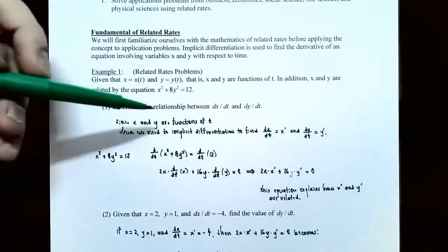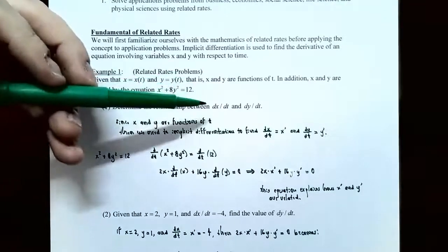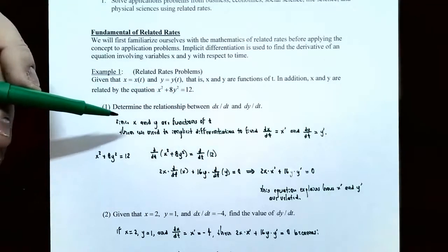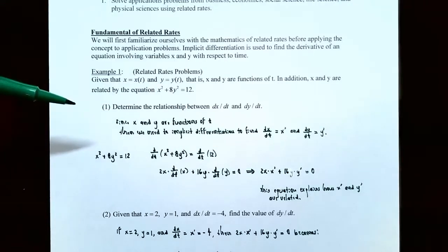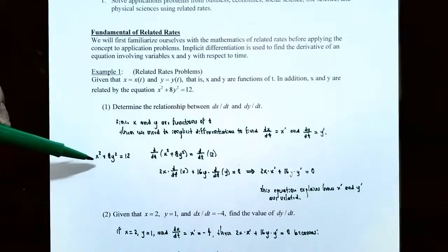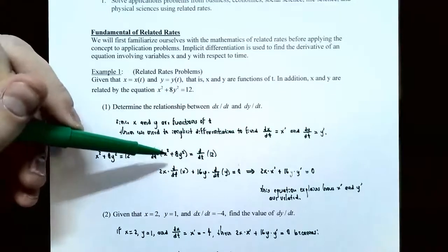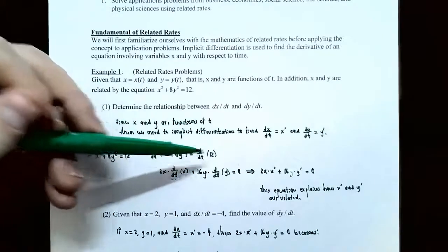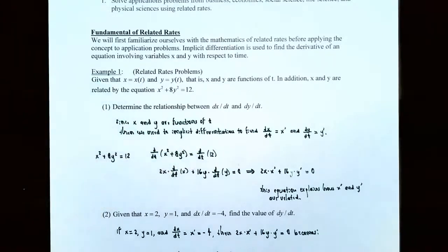Part one: determine the relationship between dx/dt and dy/dt. Since x and y are functions of time t, we use implicit differentiation to introduce the rates of change. Take the derivative of both sides of the equation with respect to time t. Keep in mind that x is a function of time, so anytime you take a derivative of x you multiply by x prime using the chain rule.